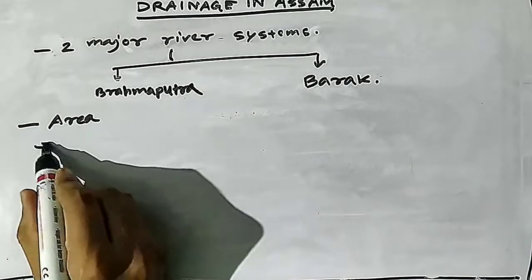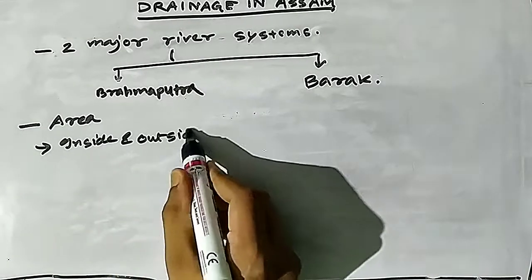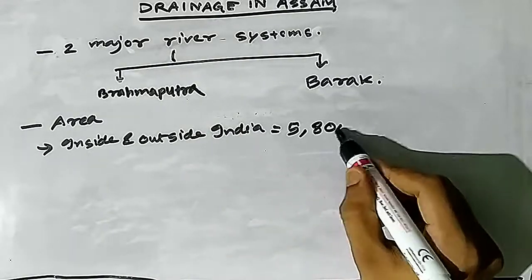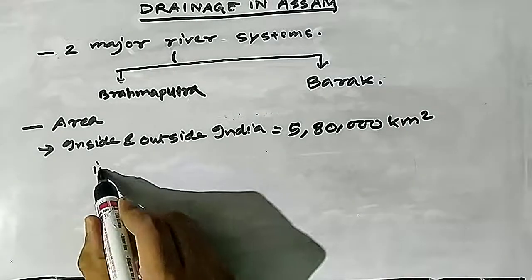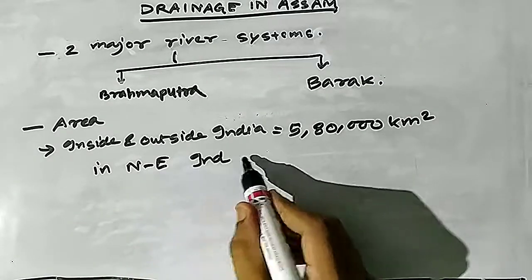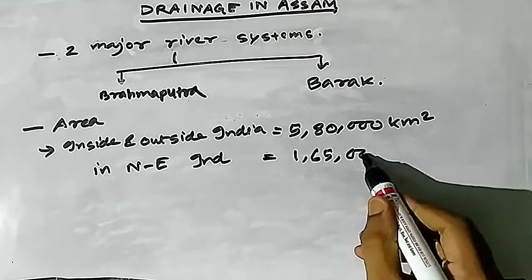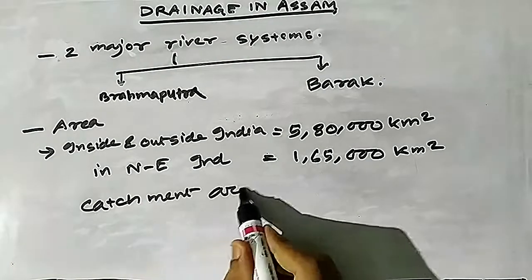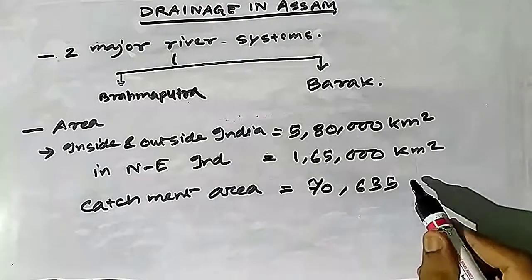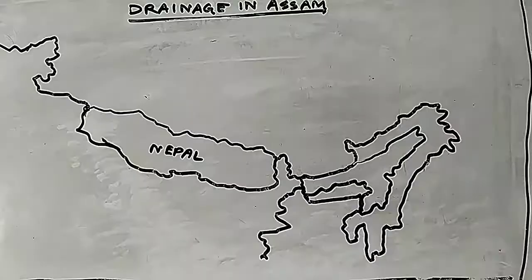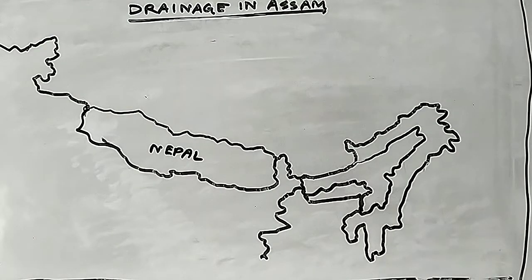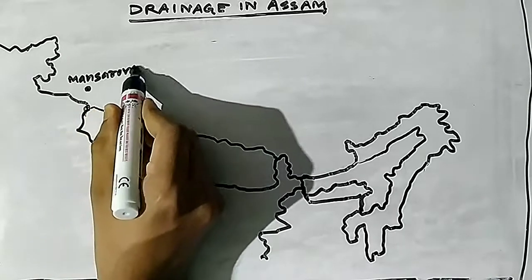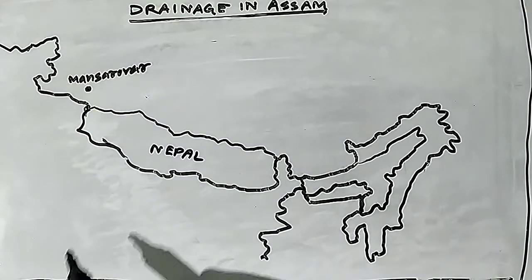The total area of the Brahmaputra basin, including outside India, is 5,80,000 square kilometers. In Northeast India it is about 1,65,000 sq km. However, the catchment area of the river within Assam is about 70,635 sq km.